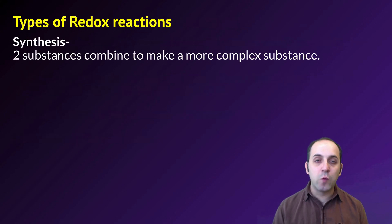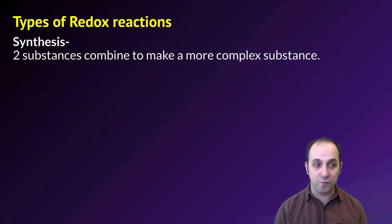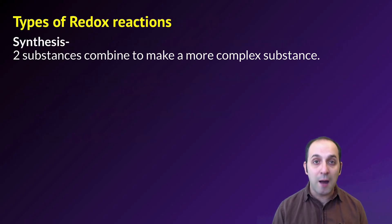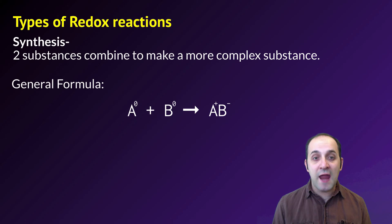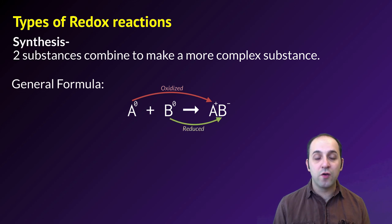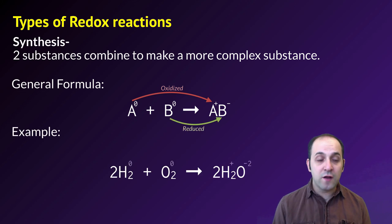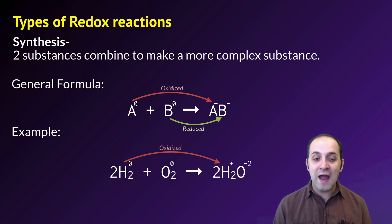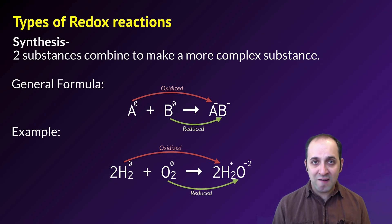In the second part of this lesson, we're going to look at four different types of redox reactions. The first is what we call a synthesis reaction. In a synthesis reaction, two substances are put together to make a more complex substance. Synthesis reactions have the general formula A plus B yields AB. A goes from zero to some positive value so it's oxidized, and B goes from zero to some negative value so it's reduced. A classic example is hydrogen gas plus oxygen gas yielding water — you can see that hydrogen is oxidized and oxygen is reduced when they combine to make water.